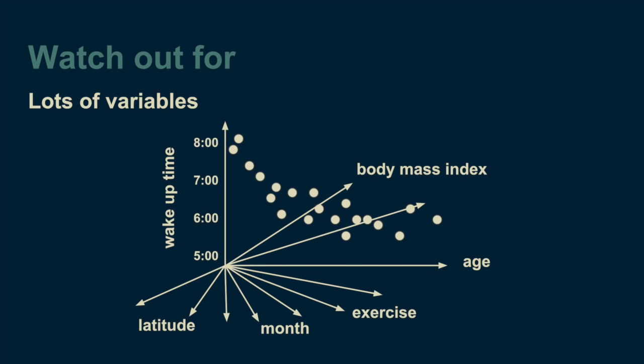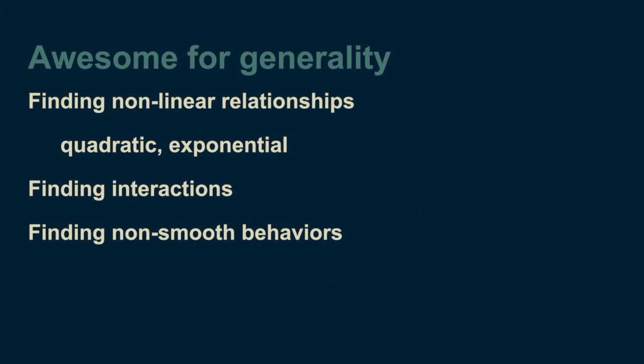As long as you keep your eyes open for places where decision trees might fail, you're free to take advantage of their strengths. Decision trees are fantastic for when you want to make as few assumptions about your data as possible. They're quite general. They can find non-linear relationships, between your predictor variables and your target variable, as well as non-linear interactions between predictor variables.